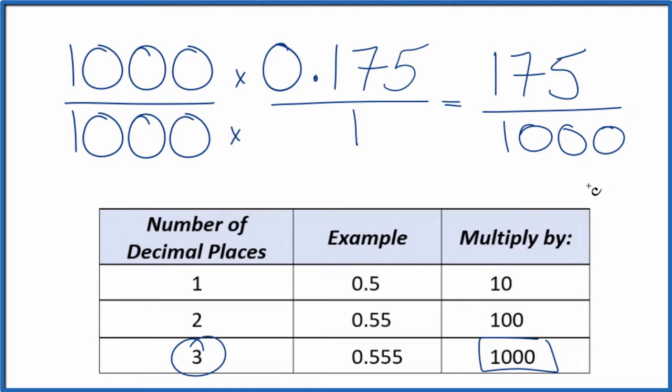And now we have our fraction. The decimal 0.175 equals the fraction 175 over a thousand. But we can simplify this further.